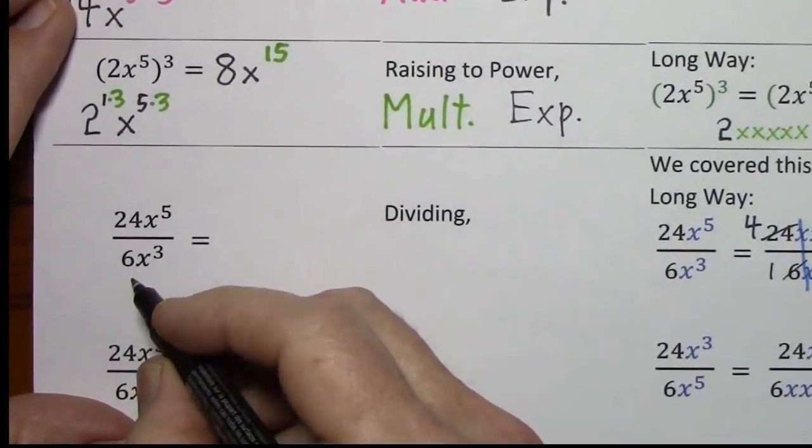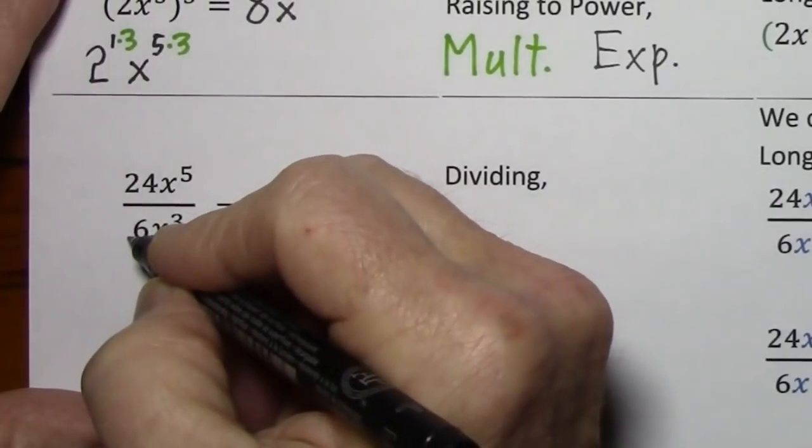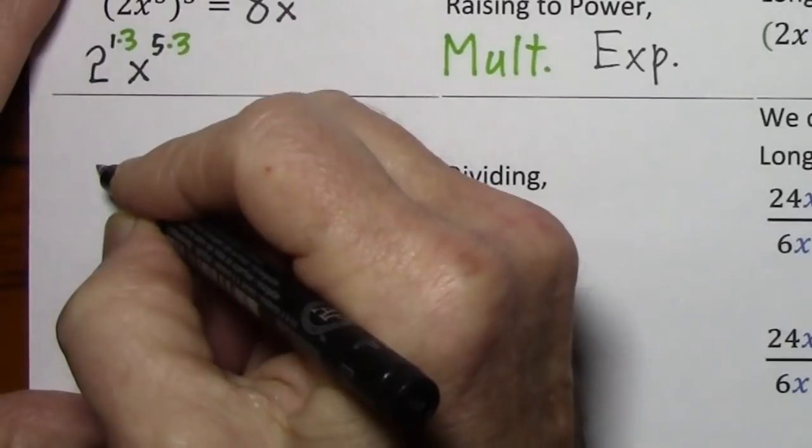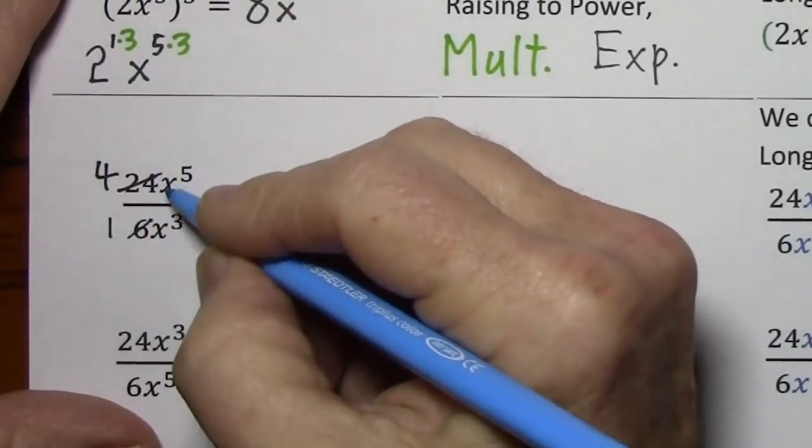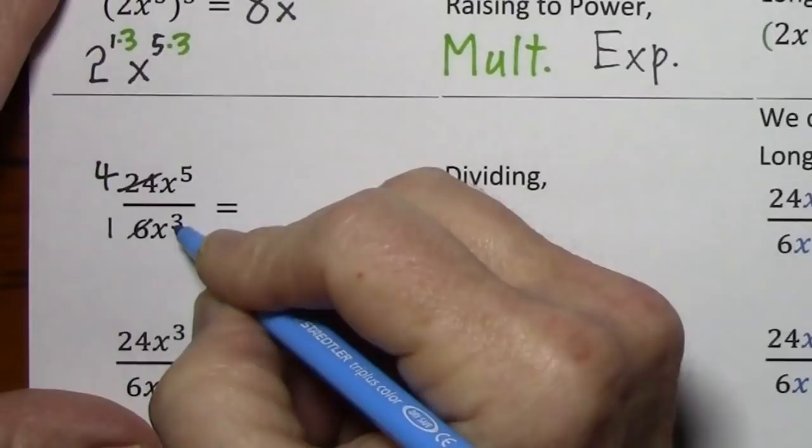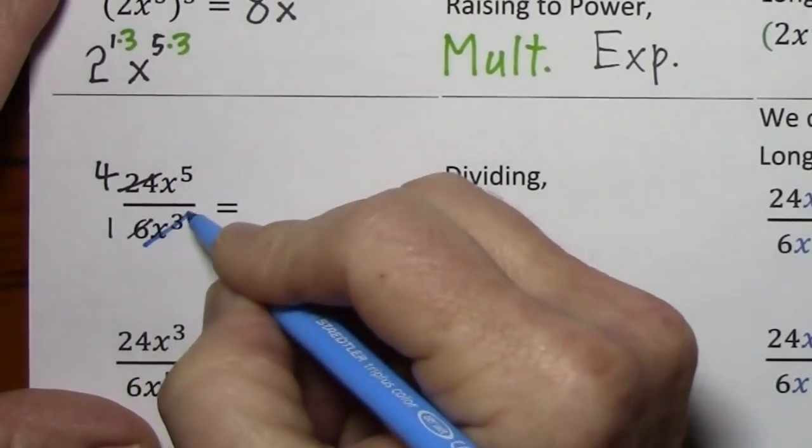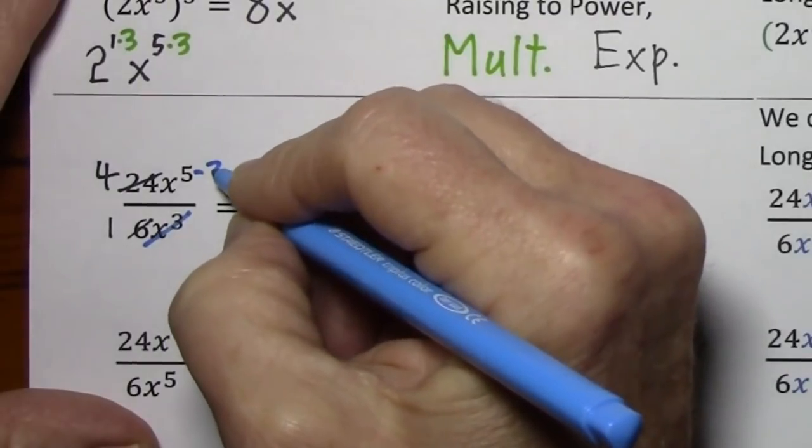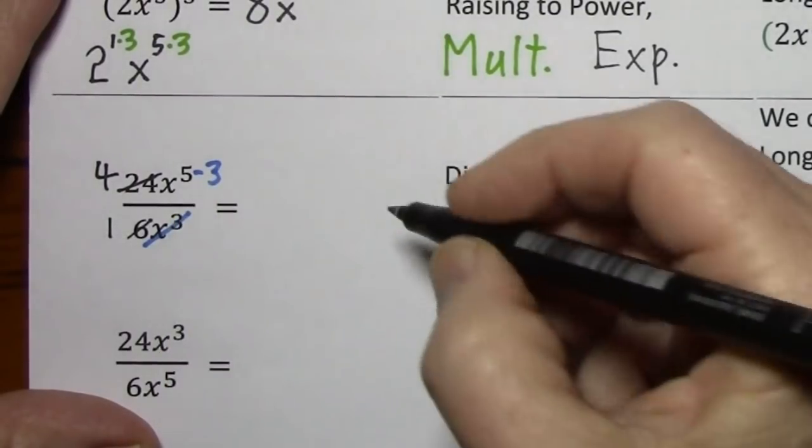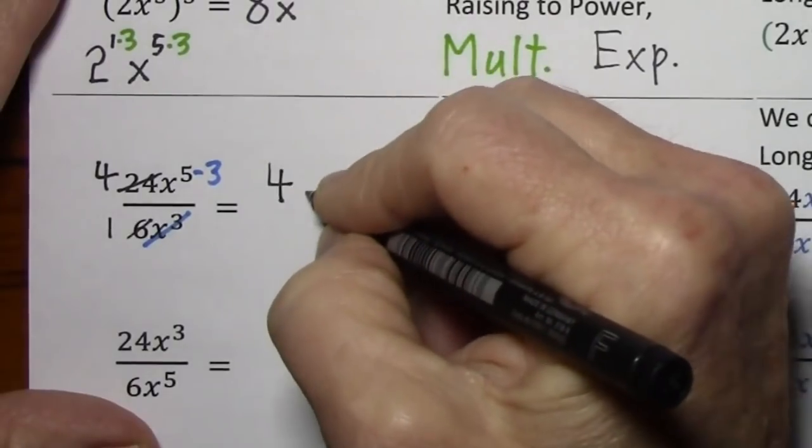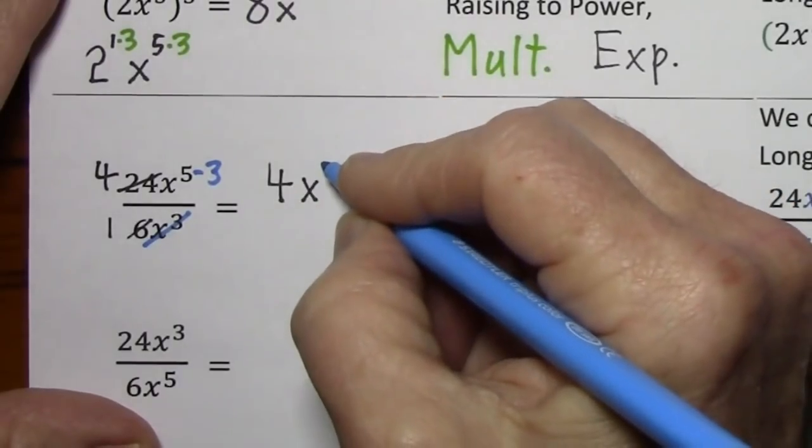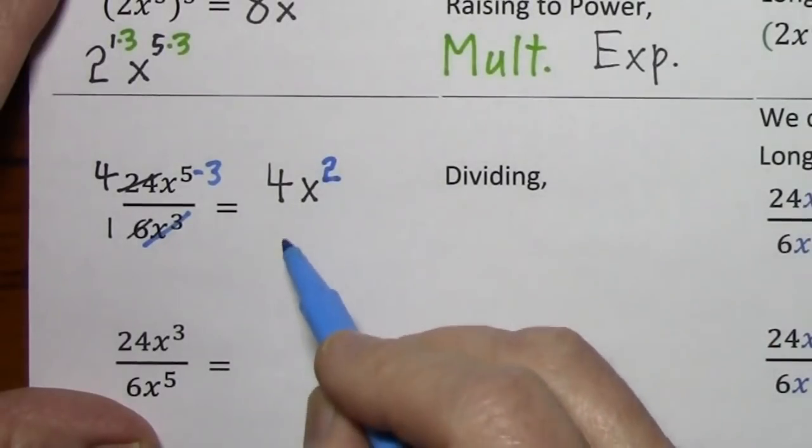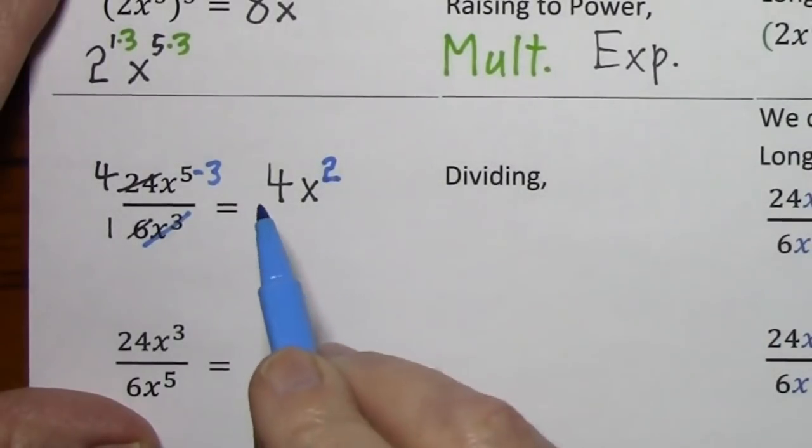But as I indicated before, a much faster way, you start out the same. Divide by 6, divide by 6. But for these variables and exponents, x to the third is the smaller one, so you cancel out x to the third so long as you subtract 3 from the 5. So this leaves you with 4x squared. Technically it's over 1, but you would simplify it and just write 4x squared.